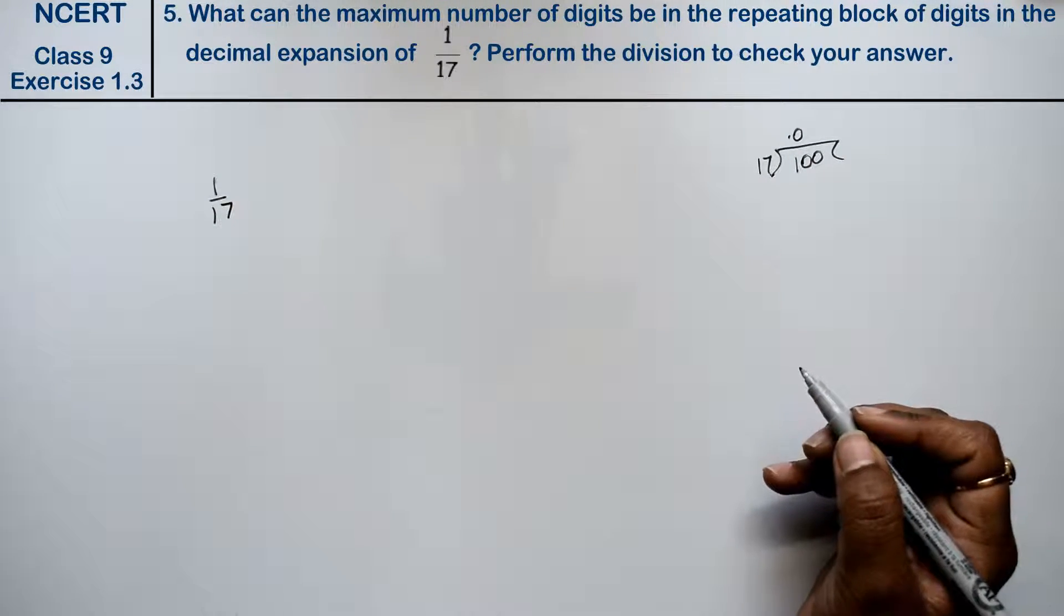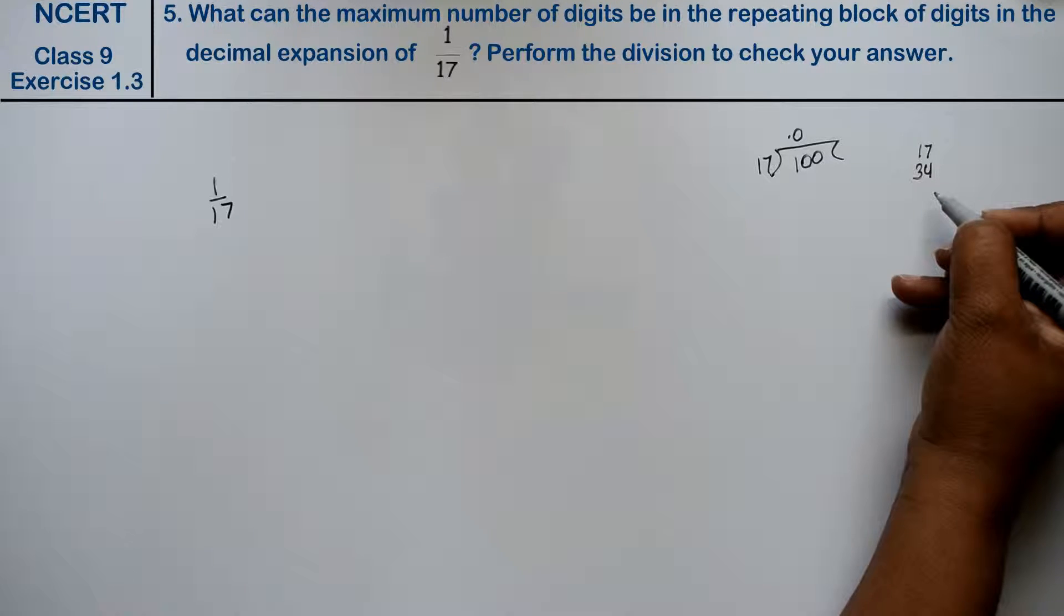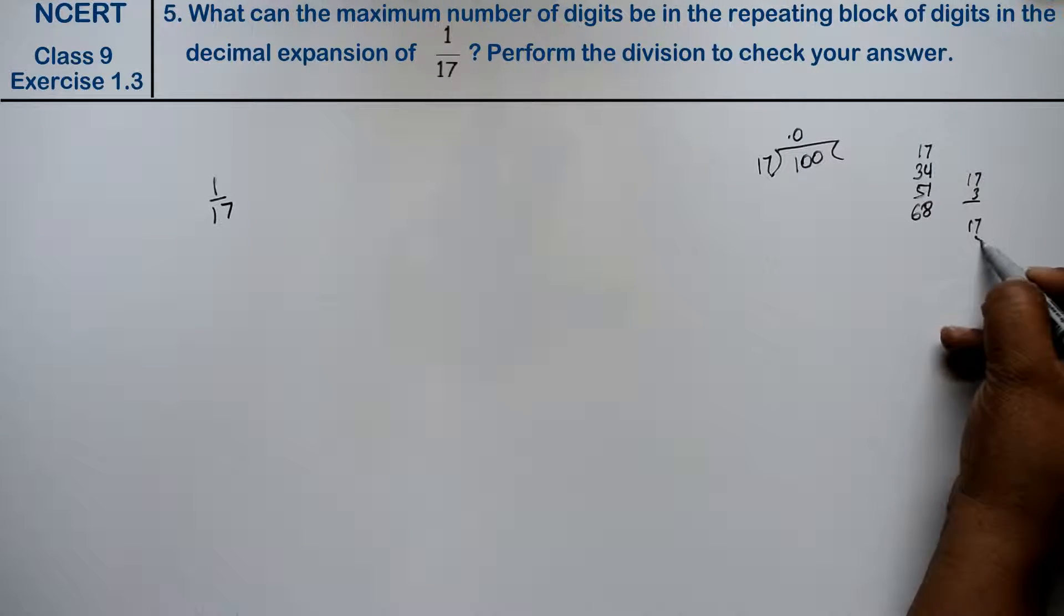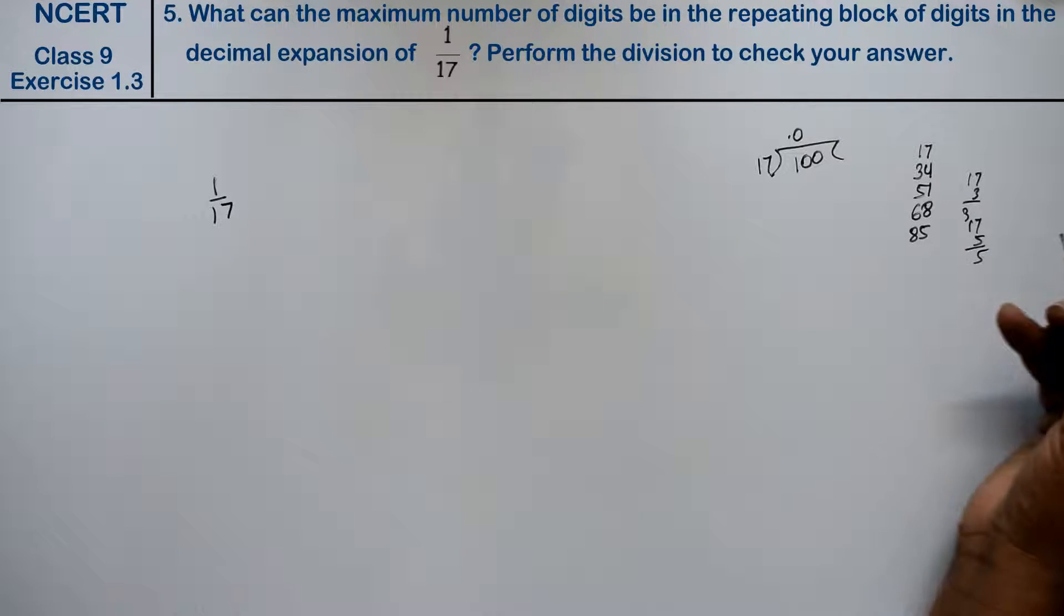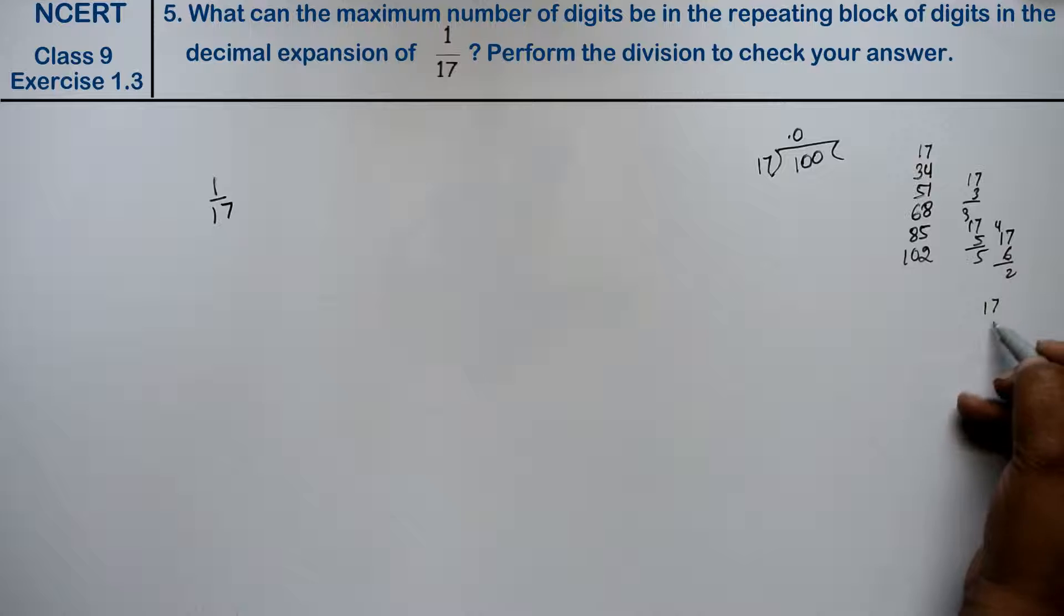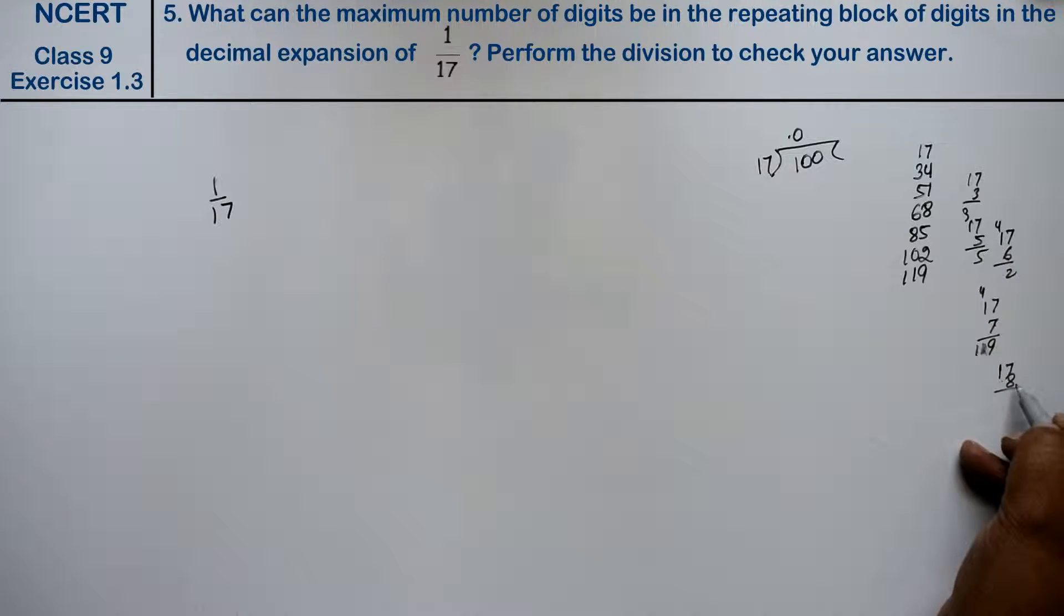So it becomes 10, now let's list the multiples of 17: 17×1 is 17, 17×2 is 34, 17×3 is 51, 17×4 is 68, 17×5 is 85, 17×6 is 102, 17×7 is 119, 17×8 is 136, and 17×9 is 153.